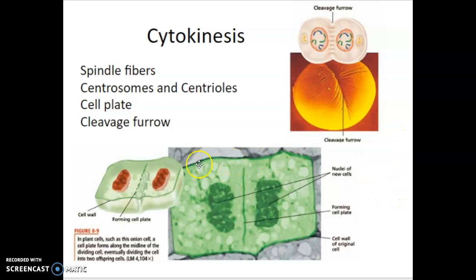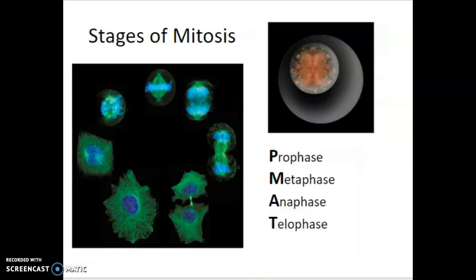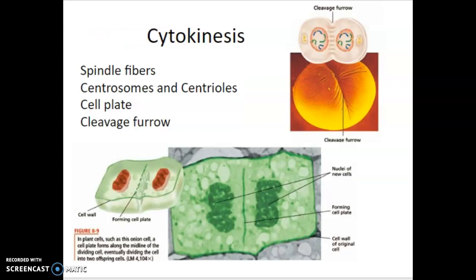Plant cells, since they have a cell wall, need something extra. There's some membrane pinching, but they also have to grow a new cell wall between the two new cells. This new forming cell wall is called a cell plate — it starts in the middle and grows toward either end, fusing into the outer cell wall. So animal cells have a cleavage furrow with cell membrane pinching in, whereas plant cells have a cell plate that forms and grows into a new cell wall between the two new cells.